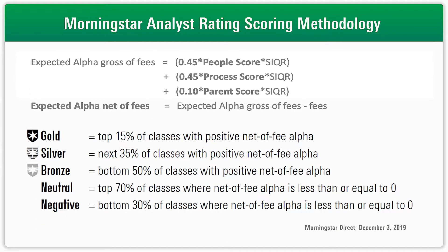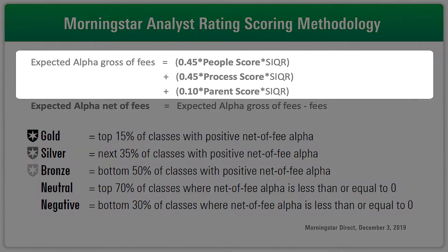Here you'll see an overview of our fund ratings methodology and how it breaks out. To start with, we calculate an aggregate score called the expected gross-of-fee alpha. As you can see, it's basically a weighted average of our people, process, and parent scores multiplied by something called the semi-interquartile range, or the semi-IQR. In a nutshell, the semi-IQR is a multiplier that is calculated for each fund category to lever up or down the effects of our pillar scores.